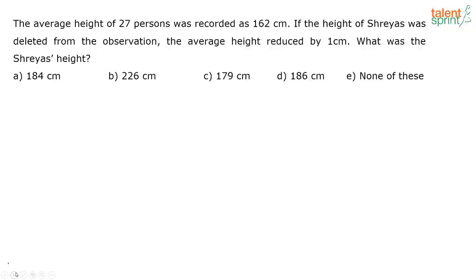The average height of 27 persons was recorded as 162 cm. If the height of Shreya was deleted from the observation, the average height reduced by 1 cm. What was Shreya's height?